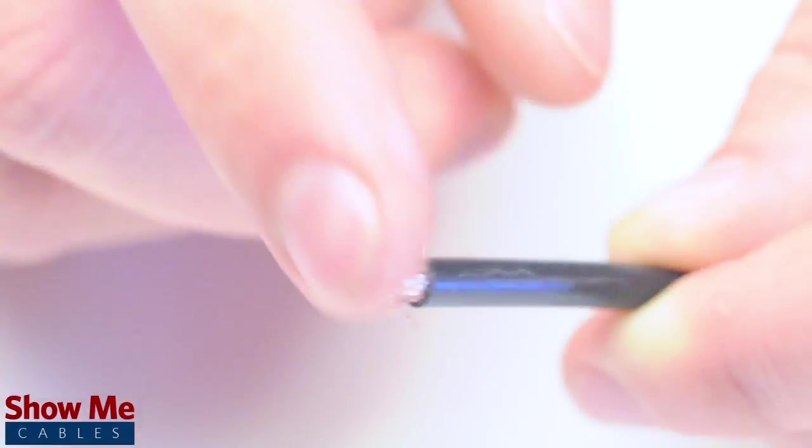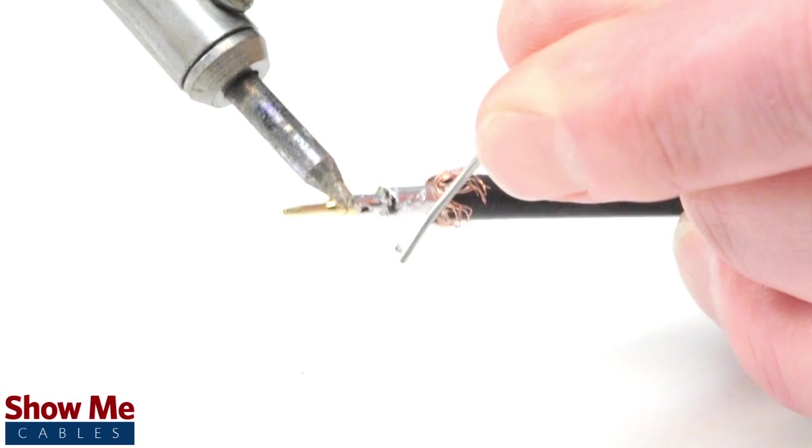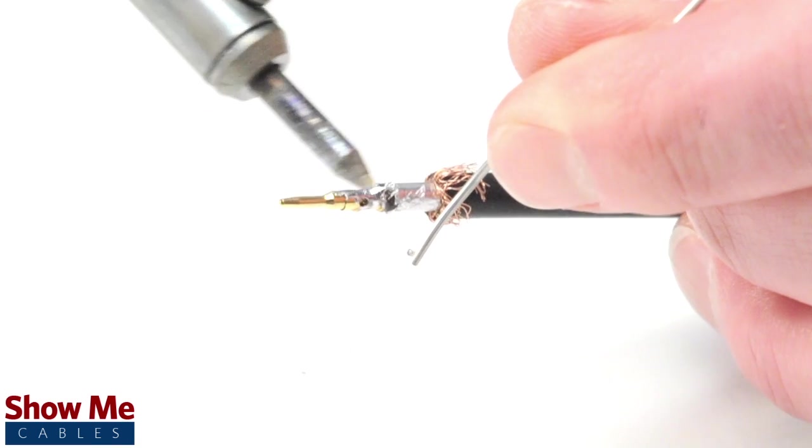Pull back the braided shield and insert the pin onto the center conductor. Solder the pin onto the center conductor and insert the connector housing over the cable.